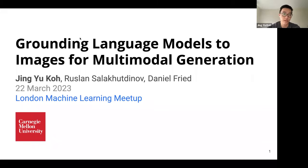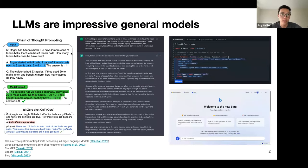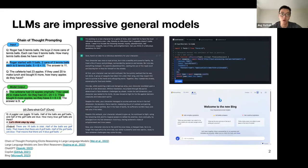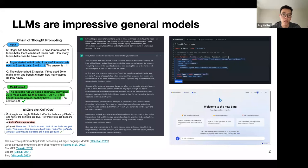I'm very happy to be here sharing our recent paper, Grounding Language Models to Images for Multimodal Generation, done with my advisors Ruslan Salakudinov and Daniel Fried at Carnegie Mellon. Most of us have experienced the very impactful changes in large language models. They can reason about math problems, elicit certain outputs, generate long coherent stories, improve programming efficiency like GitHub Copilot, and integrate into retrieval systems like Bing or Google BARD.